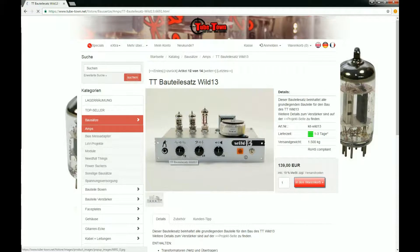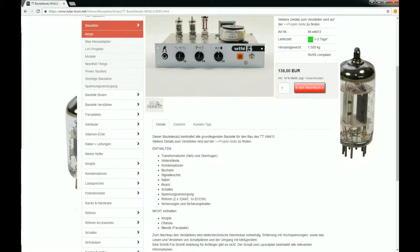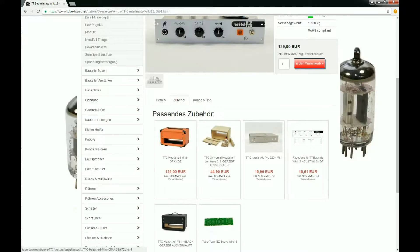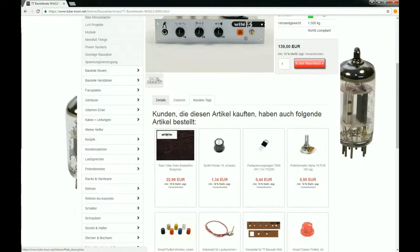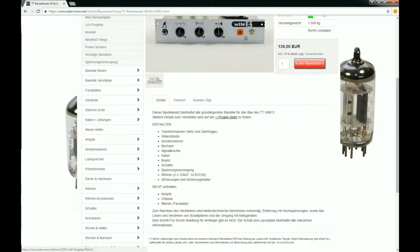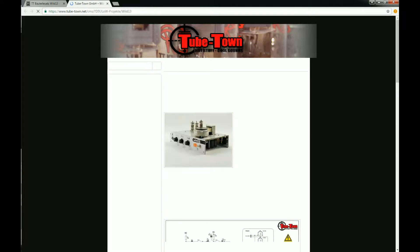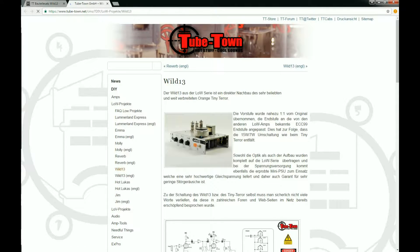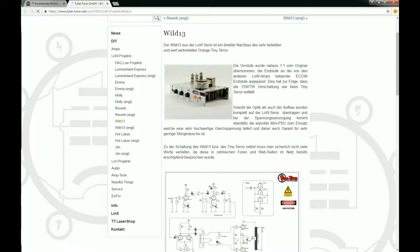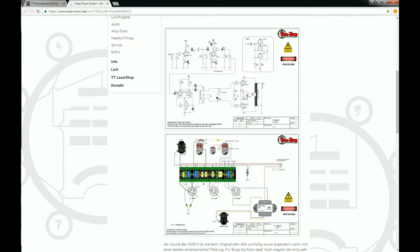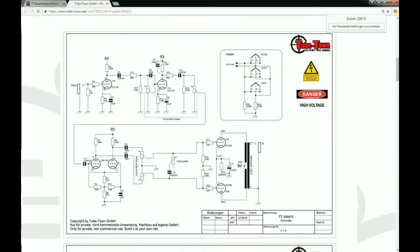While surfing on the internet I discovered a company called TubeTone settled in Germany. They offer do-it-yourself tube amp kits based on famous amplifiers and everything else you need for the perfect amplifier. So I saw the Wild 13, an amp based on the famous Orange Tiny Terror, which would have been my choice one day. I decided to build this amp as a project and want to show you my results.